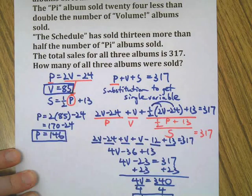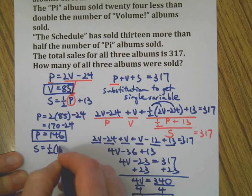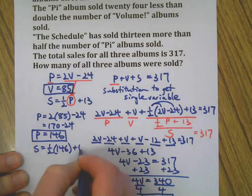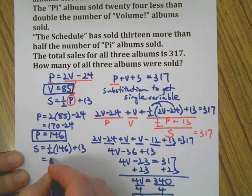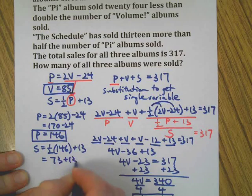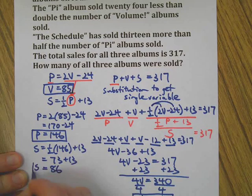And we already have the Volume album, which we think was 85. We just need Schedule. Schedule equals one-half of Pi plus 13. Half of 146 is 73, plus 13 makes 86 Schedule albums.